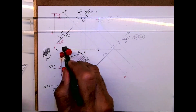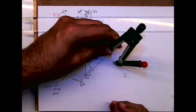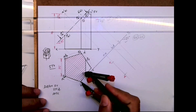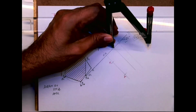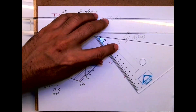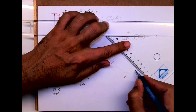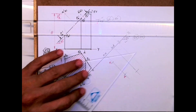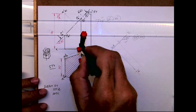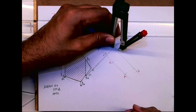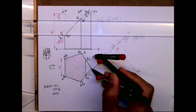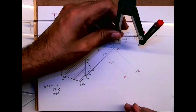Then we will take XY to E and cut from here — that will be E. Then XY to B, and similarly XY to C. These measurements are transferred from the XY reference line to the X1Y1 auxiliary plane line.